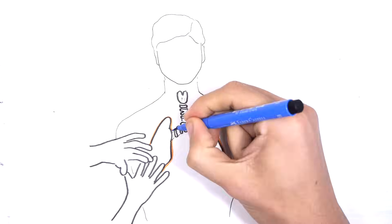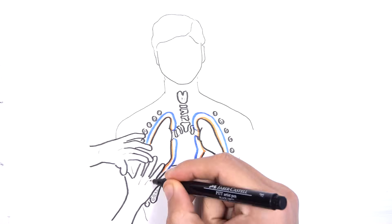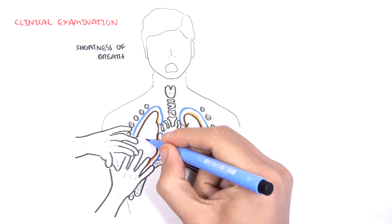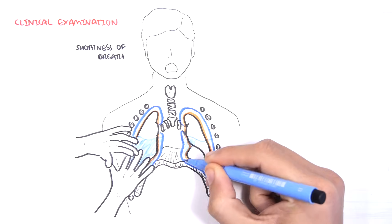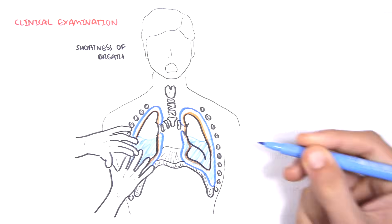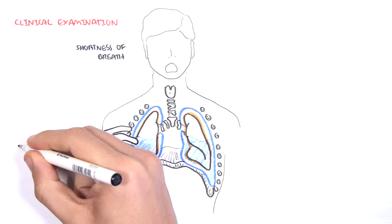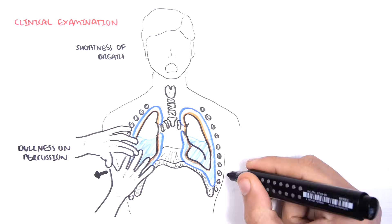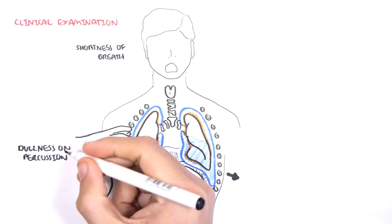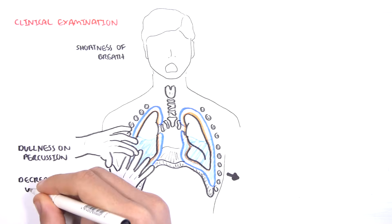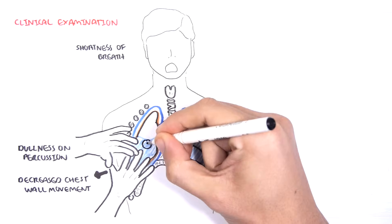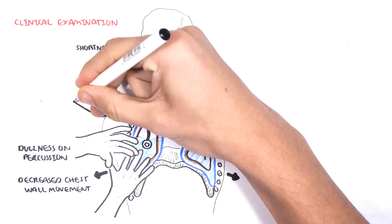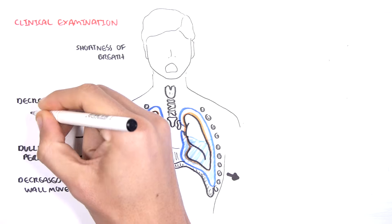The clinical findings of pleural effusions specifically include shortness of breath, because the fluid prevents proper ventilation and lung expansion. If you percuss the lung bases, they will be dull. There will also be decreased chest wall movement on the affected side, because the fluid restricts the movement. On auscultation, there will be decreased breath sounds around where the fluid is.